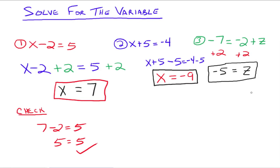We can add or subtract the same value to both sides of the equal sign, and the goal is to isolate the variable.